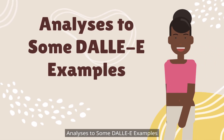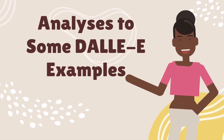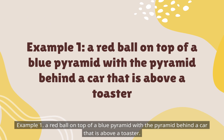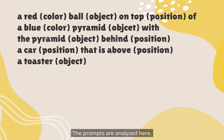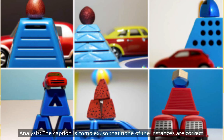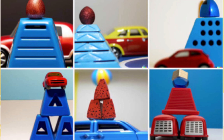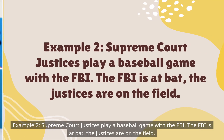Example 1: A red ball on top of a blue pyramid, with the pyramid behind a car that is above a toaster. The caption is complex, so none of the instances are correct.